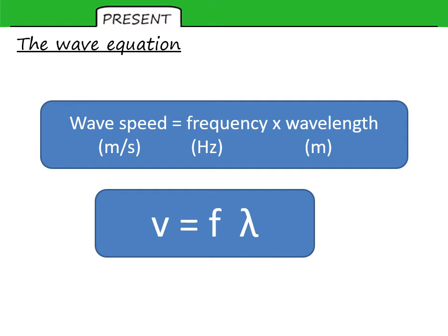We can summarize this relationship in what's called the wave equation or wave speed equation. So wave speed is equal to the frequency multiplied by the wavelength. Wave speed is measured in meters per second, frequency in hertz, and wavelength in meters.